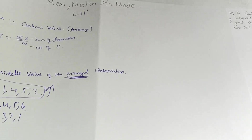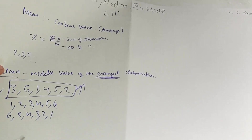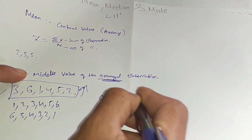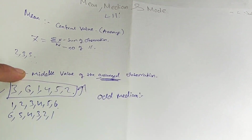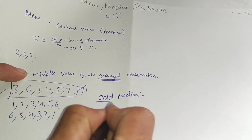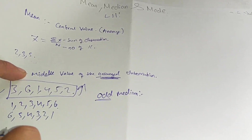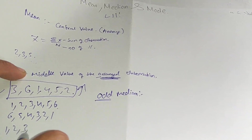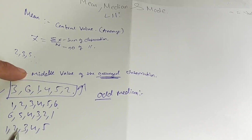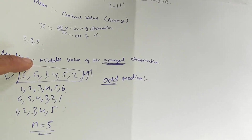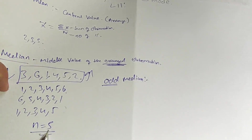There are 2 formulas for median. If the number of observations is odd — for example, observations 1, 2, 3, 4, 5 — the value of n is 5, which is an odd number. The formula for odd median is: the (n+1)/2 th value.